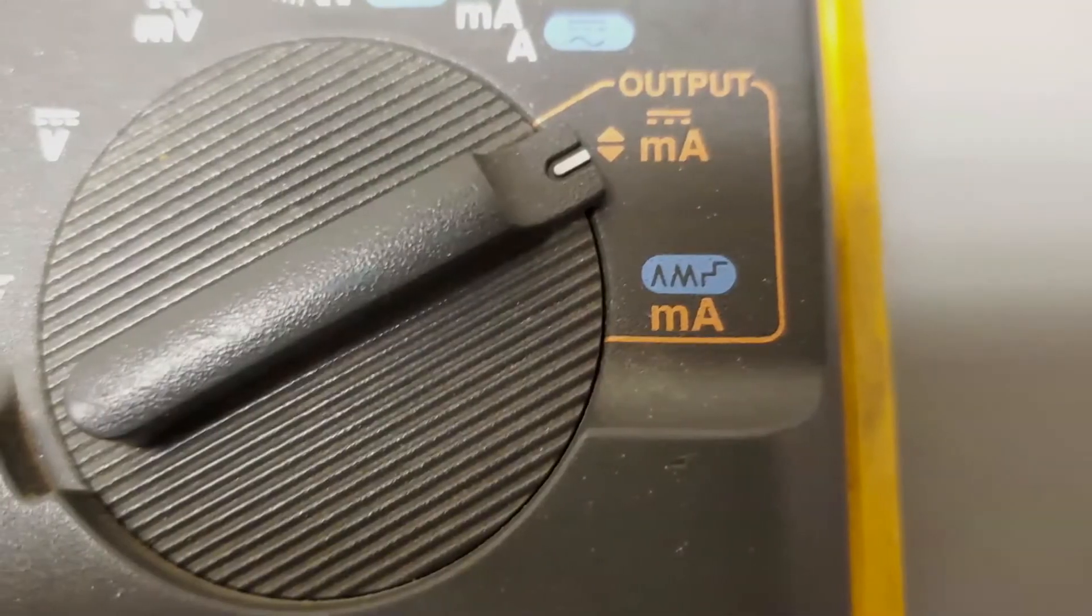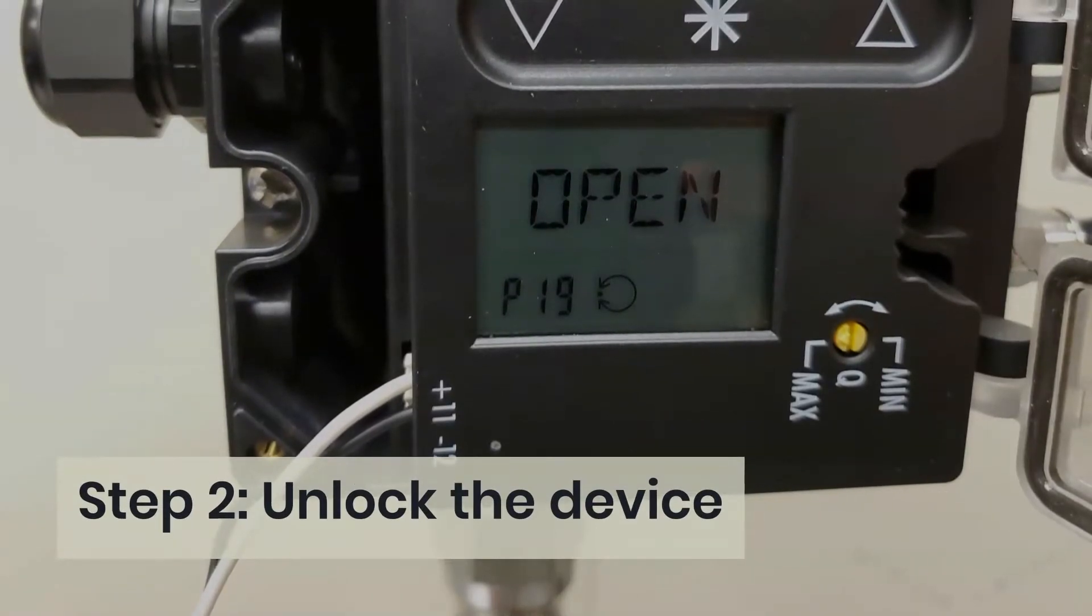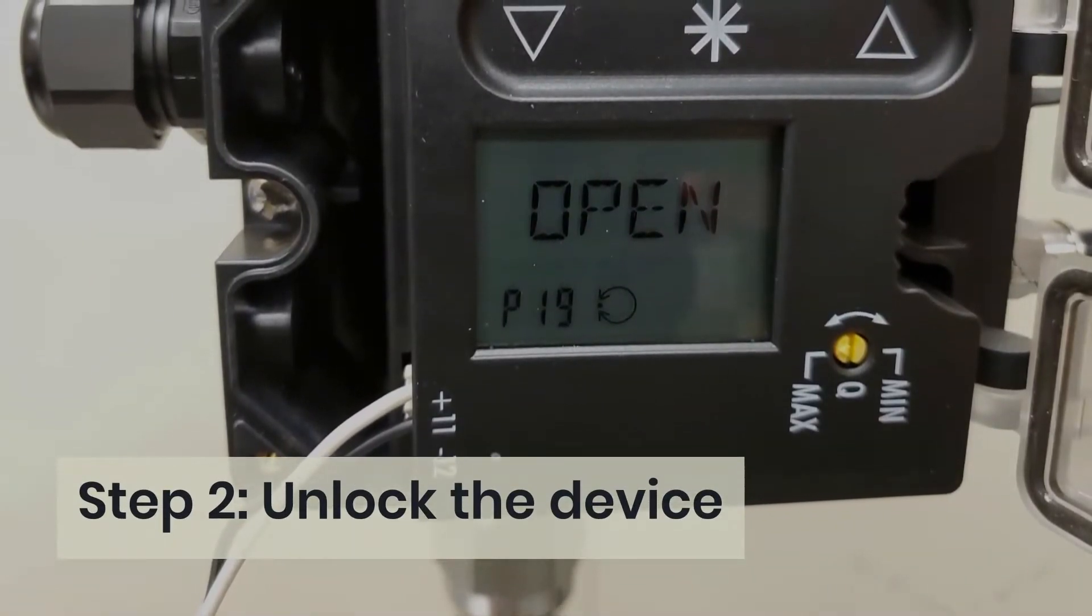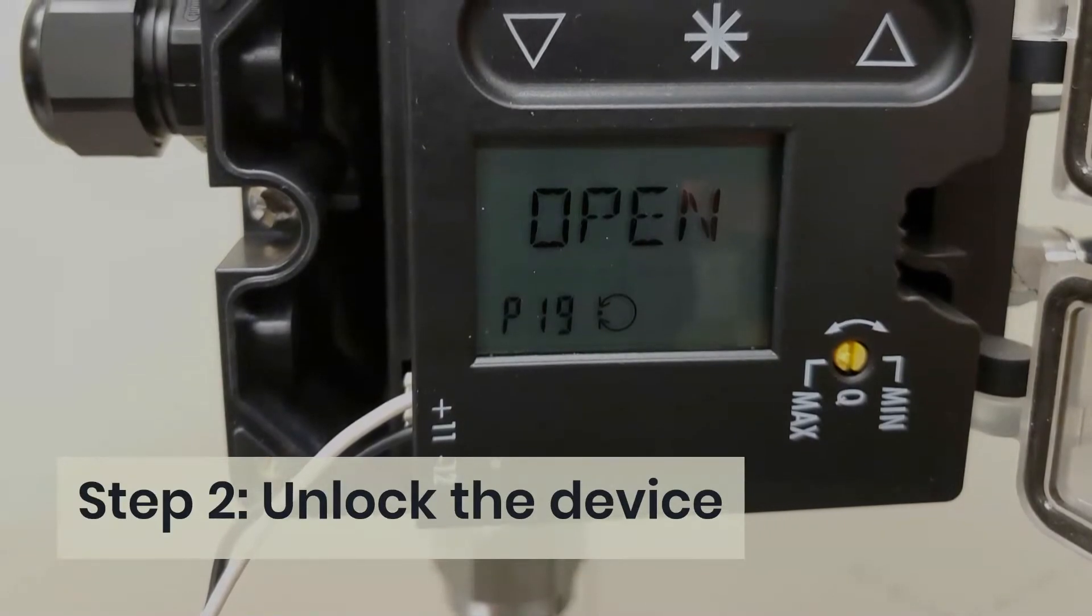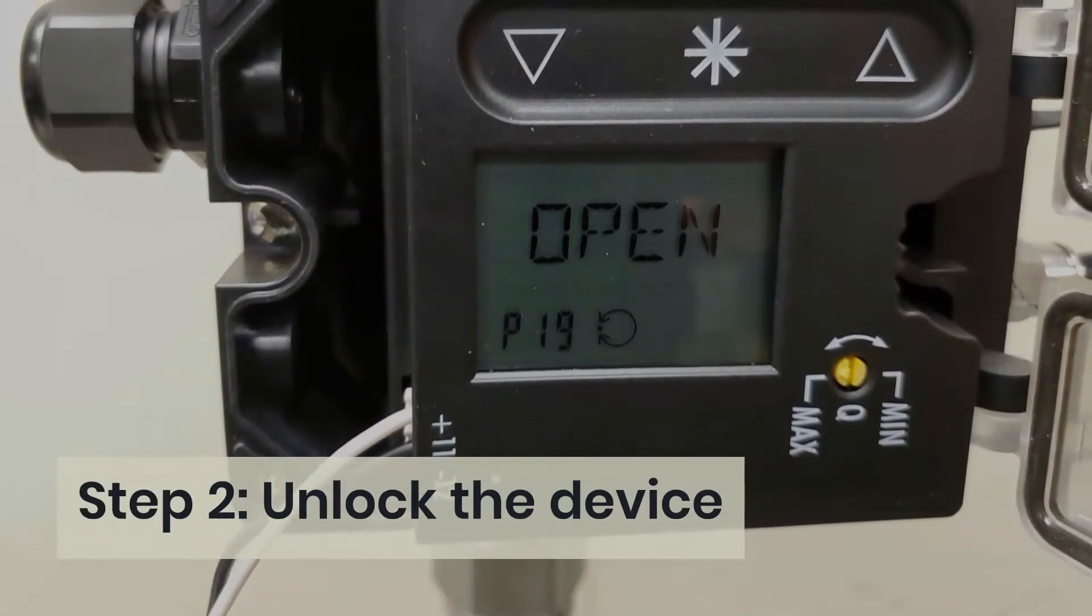Step 2: Unlock the device. Before changing parameter settings, configuration must be enabled first by selecting code P19. If no settings are entered within 3 minutes, the enabled configuration function becomes invalid. Press the down or up arrow until code P19 appears.